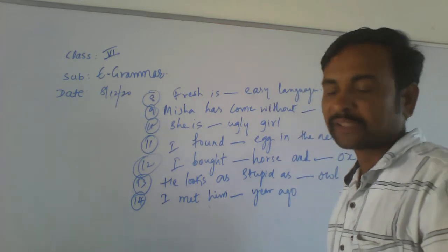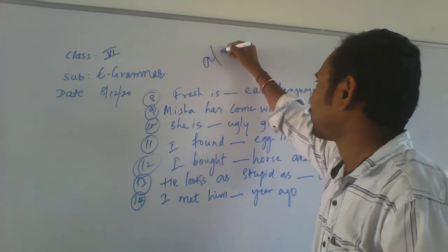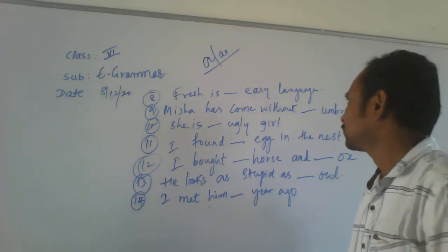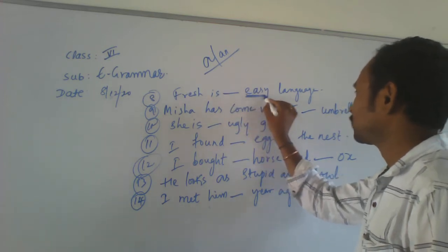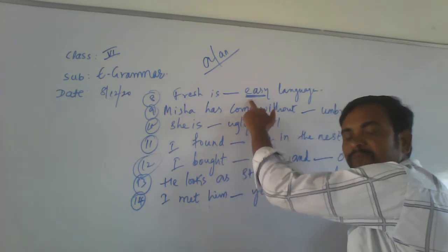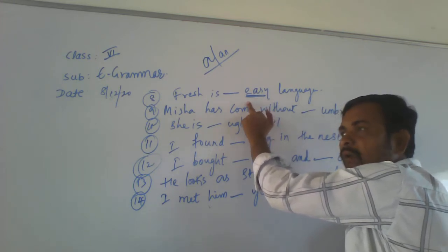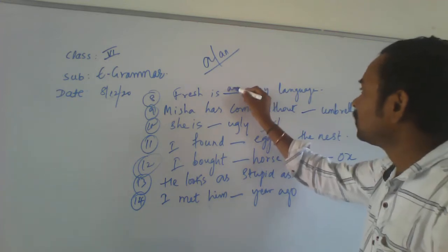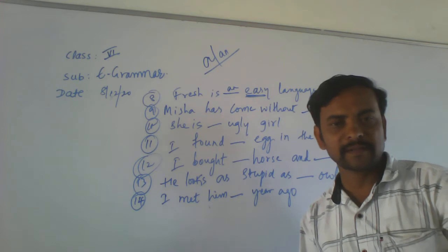What article do you have to pick in the blank? A or AN? The answer is AN — an easy language. So, French is an easy language. When the word starts with a vowel, what article do you pick? AN. So, AN easy language. French is an easy language.